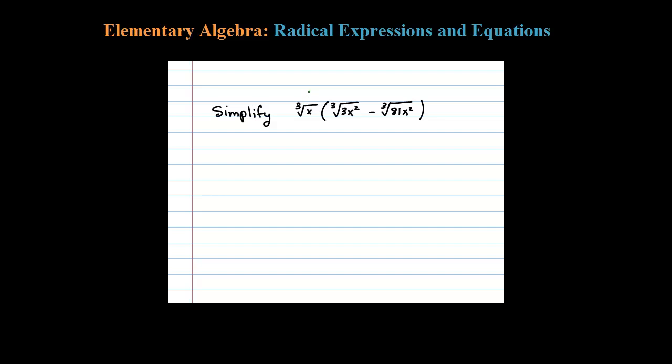Here we're going to multiply cube root of X times a binomial. Using the distributive property, we're going to multiply the radicands together. Now remember, you can only do that when the indexes are the same, so here we have cube roots.